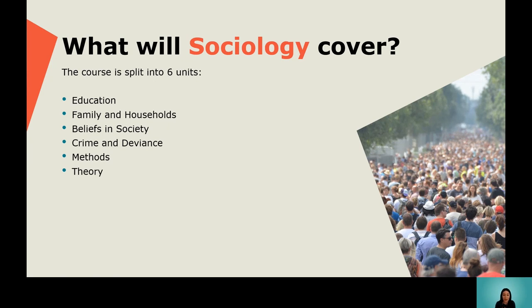In your second year you'll also look at crime and deviance. What are the patterns within society — who is it that's more likely to commit a crime and why? What crimes is society most interested in? Why do we see one thing as a crime but something else is not? Who has made those decisions? You might also look at policing and the legal justice system and think about how that has been created, what its aim and purpose is, and whether it is fulfilling the purpose it's supposed to.